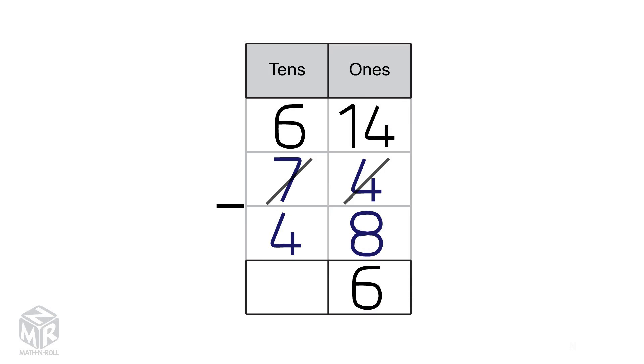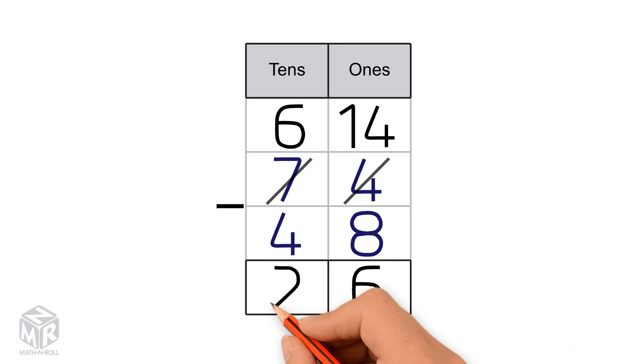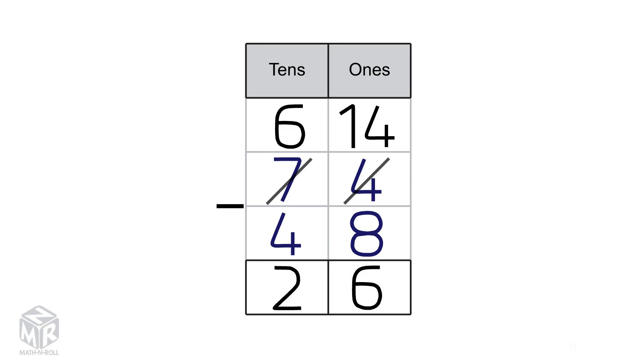Next, we subtract the 10s: 6 minus 4 equals 2. So 74 minus 48 equals 26.